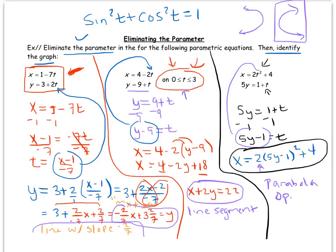Okay, so there we are - eliminating the parameter using substitution works very well. And then identifying the graph, really the ones we're going to focus on are circles, which we saw in the last video, lines, line segments, and parabolas.